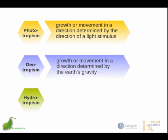Geotropism, also known as gravitropism, is a directional growth in response to gravity. This was first documented by Charles Darwin, who was able to demonstrate that roots show positive geotropism and stems show negative geotropism.